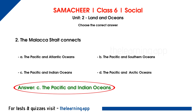What is a strait? If there are two seas, a strait is a narrow path of water connecting them. In other words, there are two land masses and two seas. The Malacca Strait connects the Pacific Ocean and the Indian Ocean.